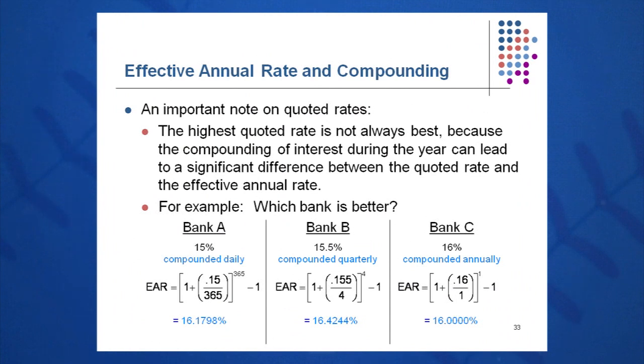Here's a good example. Where should I invest my money? Bank A pays 15% compounded daily, Bank B pays 15.5% compounded quarterly, or Bank C pays 16% compounded annually. Some people may run to Bank C and say it's 16%, that's the highest rate. But in reality, that's not the correct answer. Bank A really pays 16.2%, Bank B pays 15.5% compounded quarterly, which translates to 16.4% on an EAR basis, and Bank C is just 16%. So the right choice would be Bank B in this example.